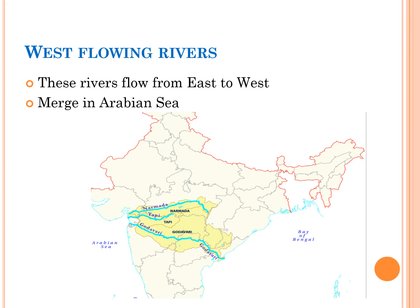The west flowing rivers are the rivers which flow from east to west and merge in the Arabian Sea. Some of the west flowing rivers are Indus, Luni, Sabarmati, Mahi, Narmada, Tapti, Juhari, Mondovi, Sharavati, Netravati, Pamba and Peria rivers.